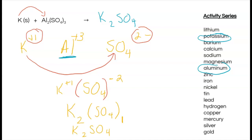To balance the equation: there are three sulfates on the reactant side, so place a three in front of potassium sulfate on the product side. That gives three times two, or six, potassiums — so put a six in front of potassium on the reactant side. There are two aluminums on the reactant side, so place a two in front of aluminum on the product side.